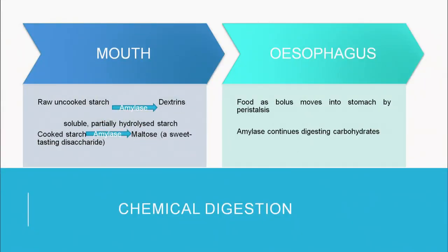In chemical digestion in the mouth, raw or uncooked starch is converted into dextrins with the help of the enzyme amylase. Cooked starch is partially hydrolyzed and converted into maltose, which is a disaccharide made up of two units of monosaccharides. In the esophagus, chemical digestion continues by salivary amylase produced in the mouth via the salivary glands, which keeps working on starches as the bolus moves into the stomach by peristaltic movement.